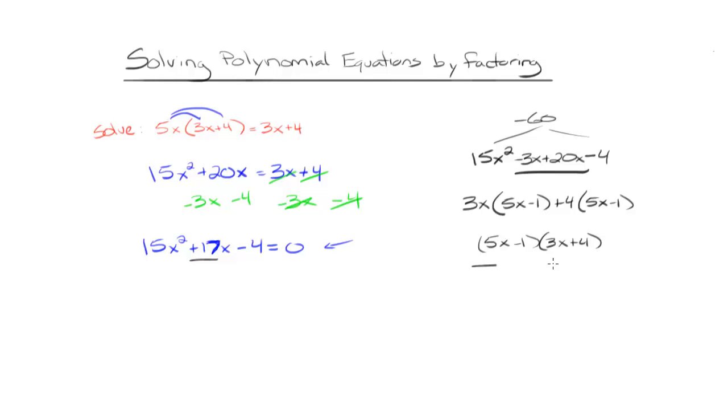This is the factored form of the left side of the equation. So 15x² + 17x - 4 becomes (5x - 1)(3x + 4).